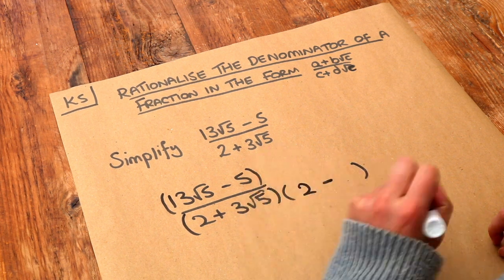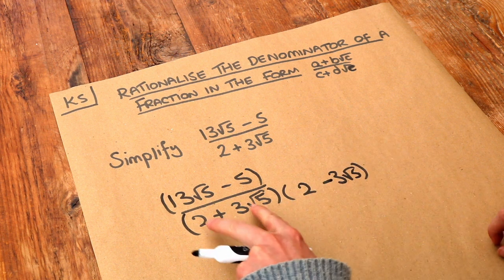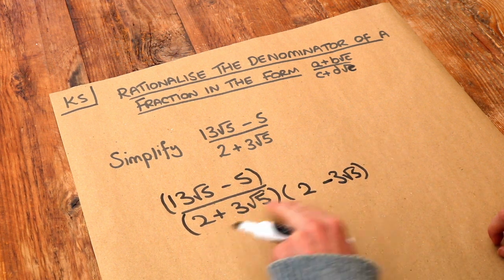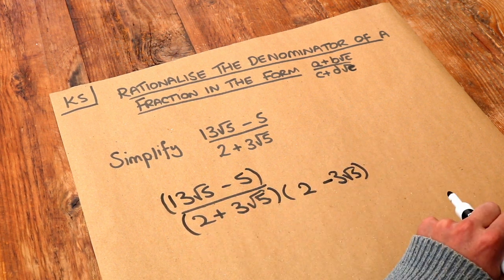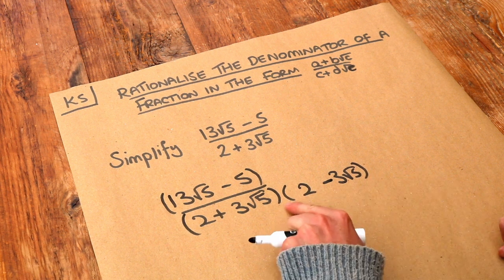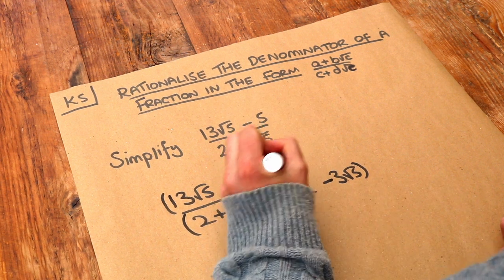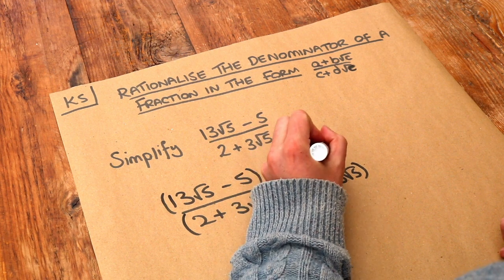And we have the same around it. So the conjugate, as it's known, of 2 plus 3 root 5 is 2 minus 3 root 5. And remember, whatever we multiply the bottom of the fraction by, we have to multiply the top of the fraction by exactly the same thing.